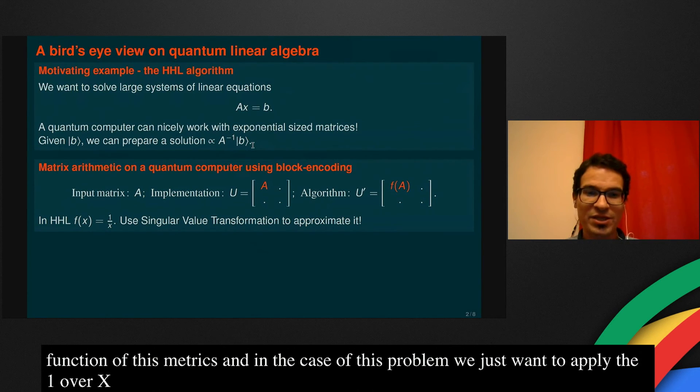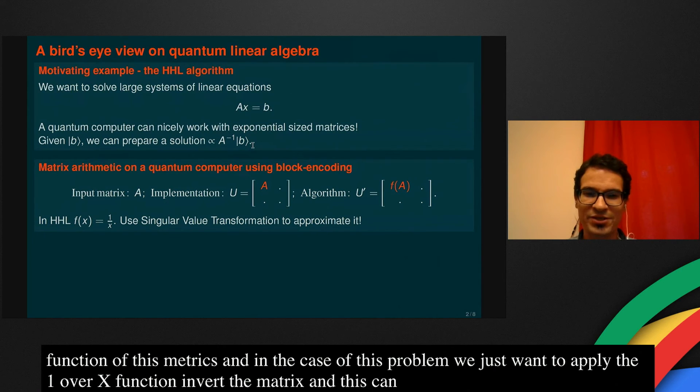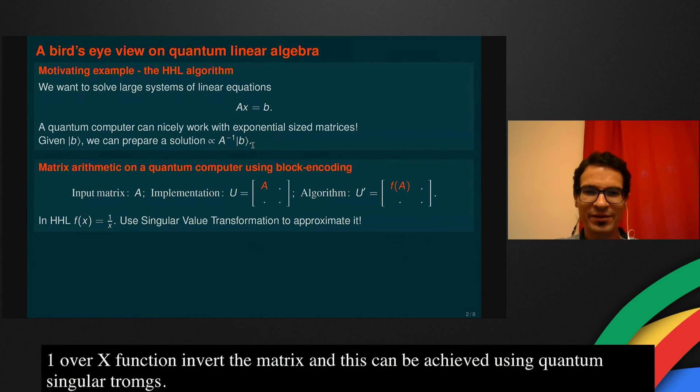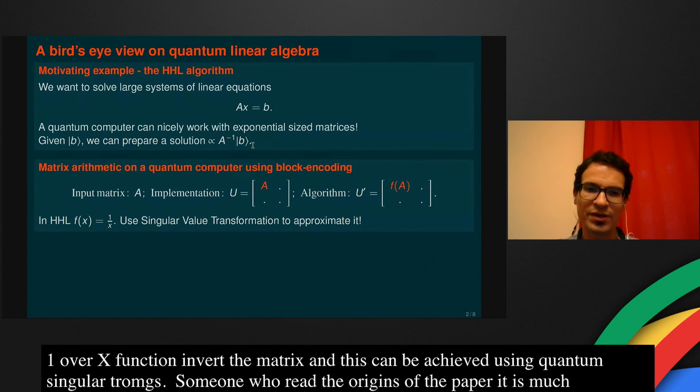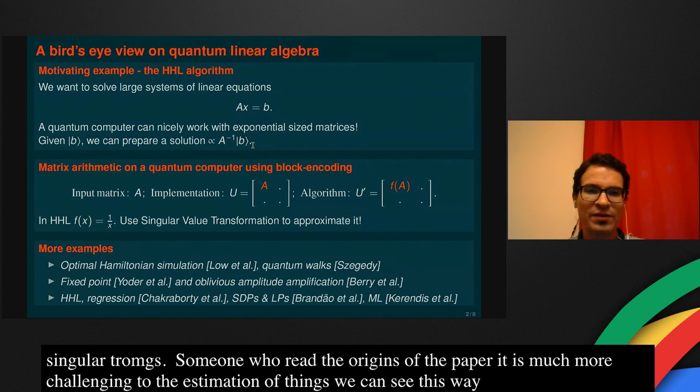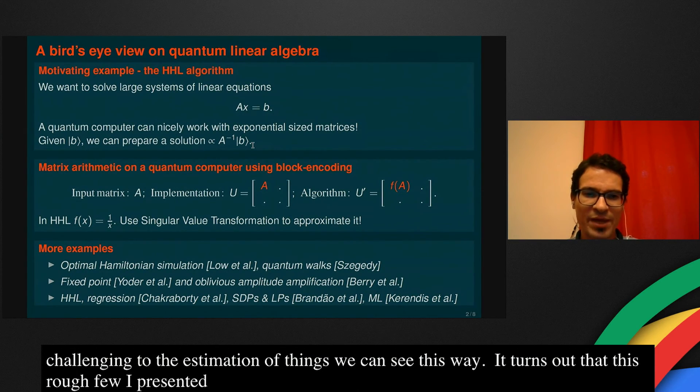This can be achieved using quantum singular value transformation. If someone read the original paper knows that actually implementing this HHL algorithm in the original version is much more challenging. It uses phase estimation and all things that we can skip this way.